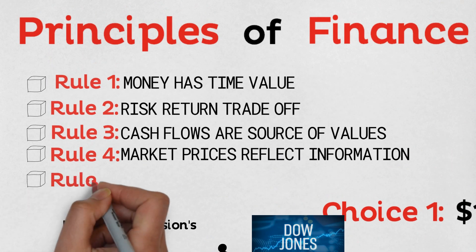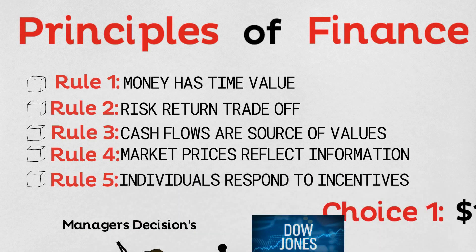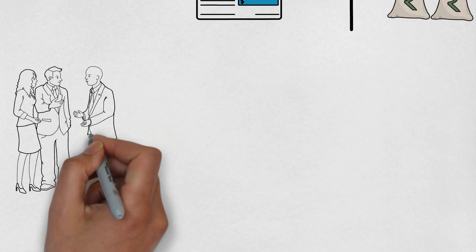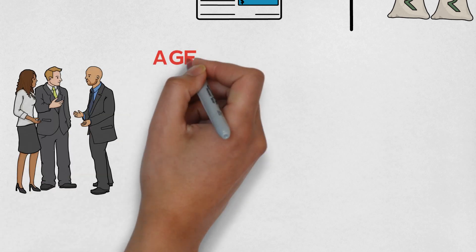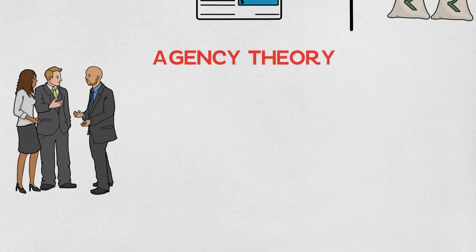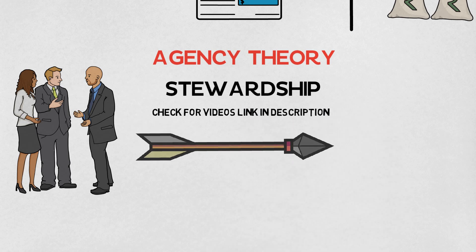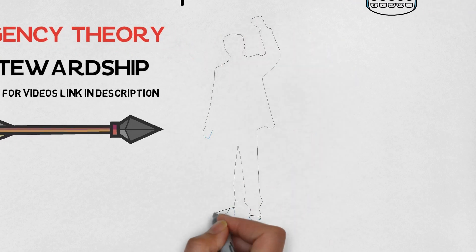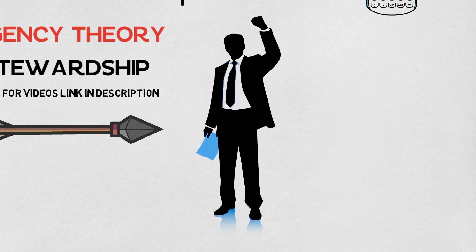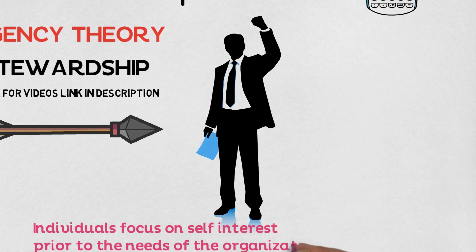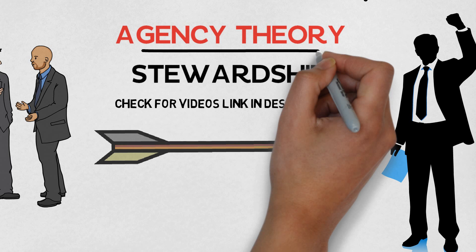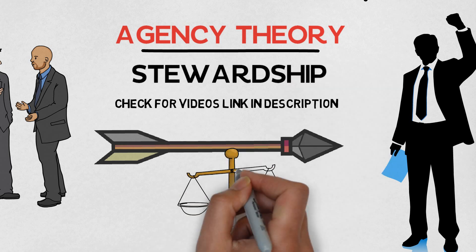Lastly, rule number five: individual response to incentives. This is a fundamental theory you need to understand to be a successful manager or entrepreneur. Agency theory and stewardship are extremely important — I'll post a link in the description to a video that explains this clearly. The key point is that you need to motivate people to act on the company's behalf. If you have a business, ensure people are well paid and their interests are taken care of, because only then will they work for the betterment of the company. Individuals will keep their own interests ahead of the company's, so as a manager you need to reward them with incentives to maintain the balance.